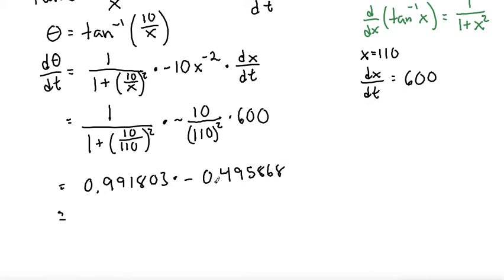And then multiplying these two numbers together, we get negative 0.491803. But the problem asks us to round to three decimal places. So we round, which is negative 0.492.